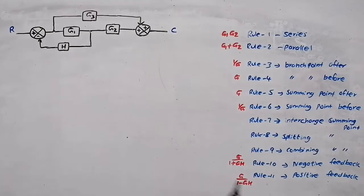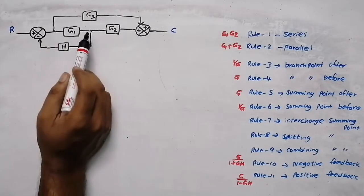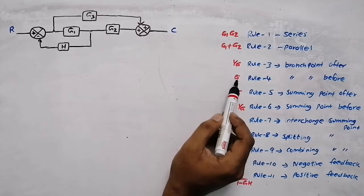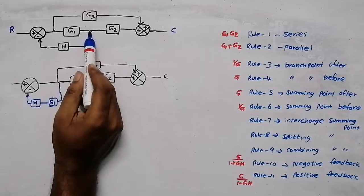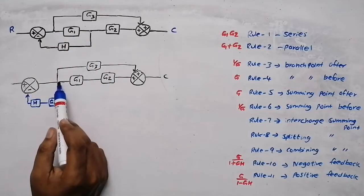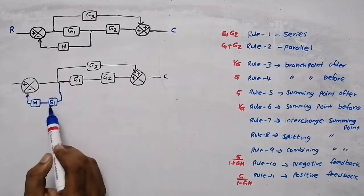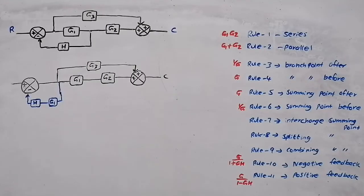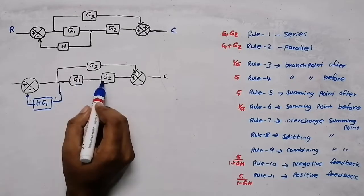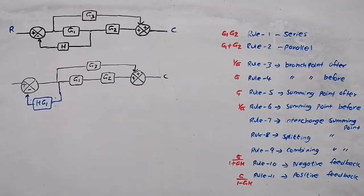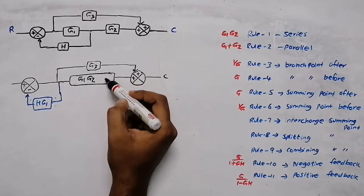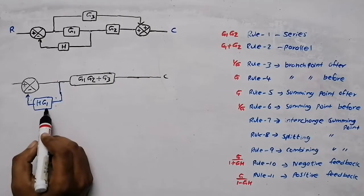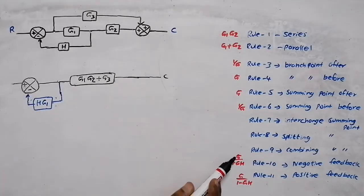Now suppose instead of moving that branch point, I move this branch point before the block. If we move a branch point before the block, we need to multiply by G. So I moved this branch point before this block and placed it here, multiplying with G1. These two blocks are now in series, so multiply them to get G1G2. These two blocks are in parallel, so add them.